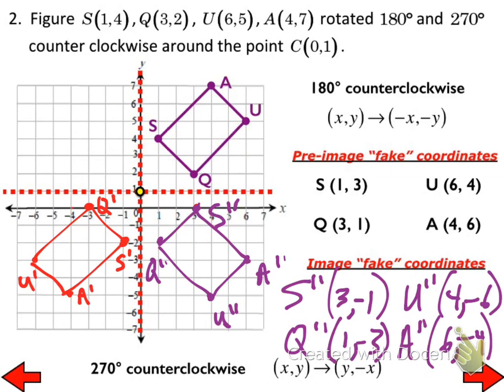Any questions about this mathematical way of doing rotations about points that are not the origin? Your homework for tonight is to finish the other four problems — each has only one rotation per coordinate plane — and to finish up the packet from last week.